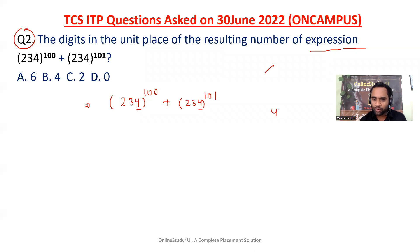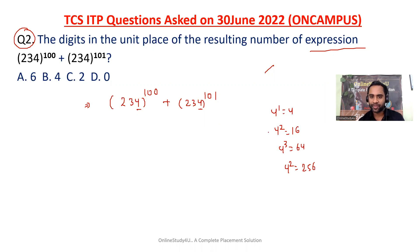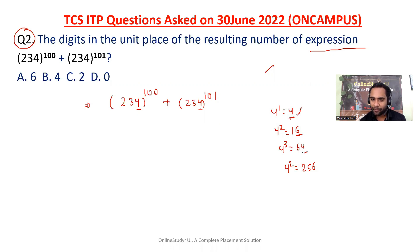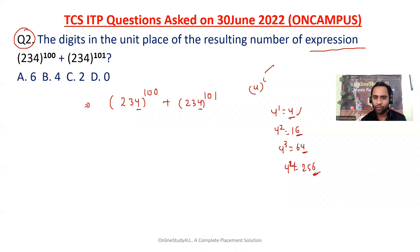Do you know the property of 4? 4^1 = 4, 4^2 = 16, 4^3 = 64, 4^4 = 256. The pattern is: if 4 is raised to an odd power, the unit digit ends in 4; if 4 is raised to an even power, the unit digit ends in 6.